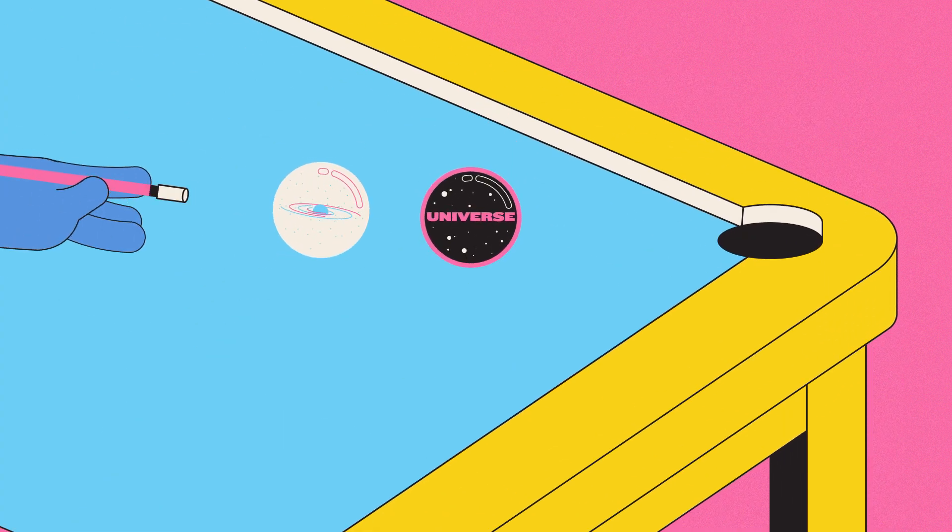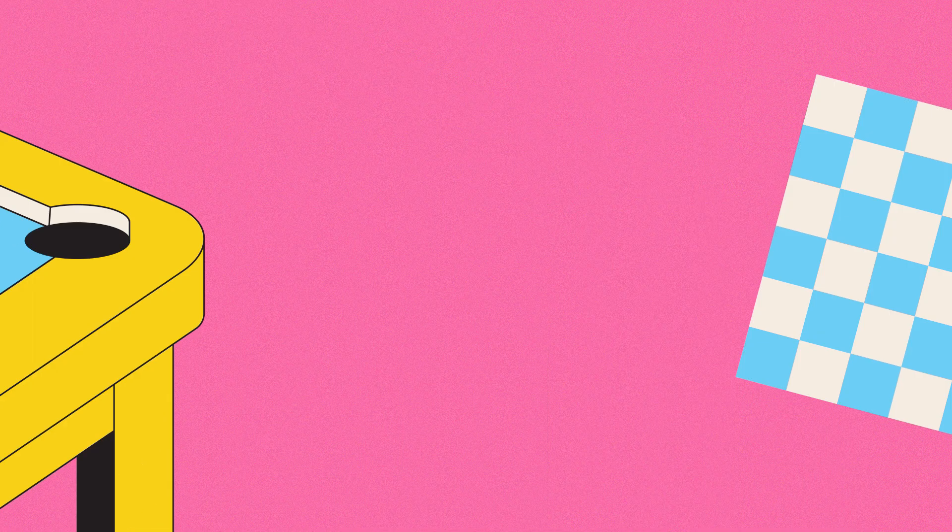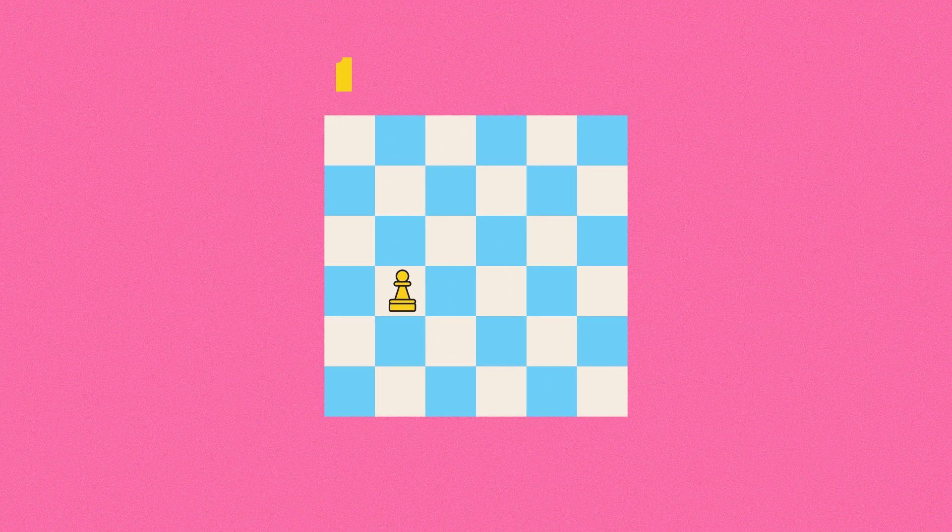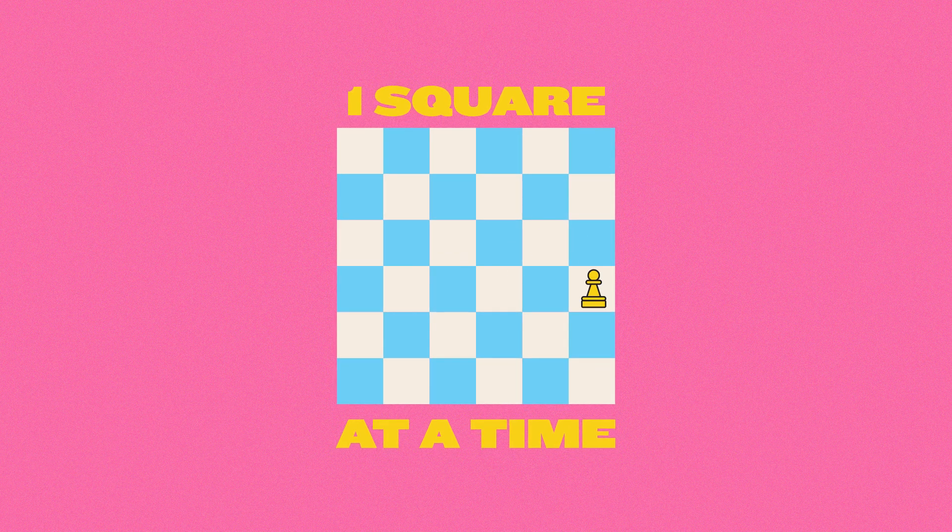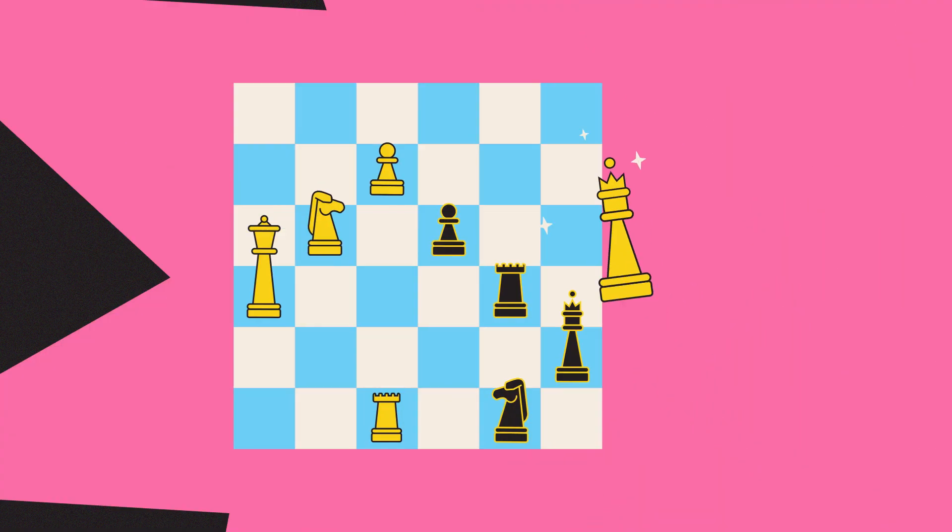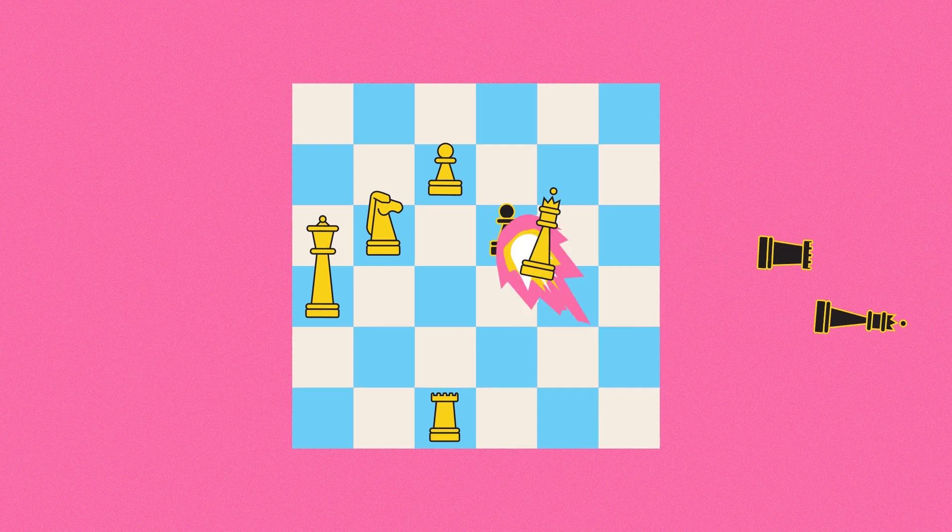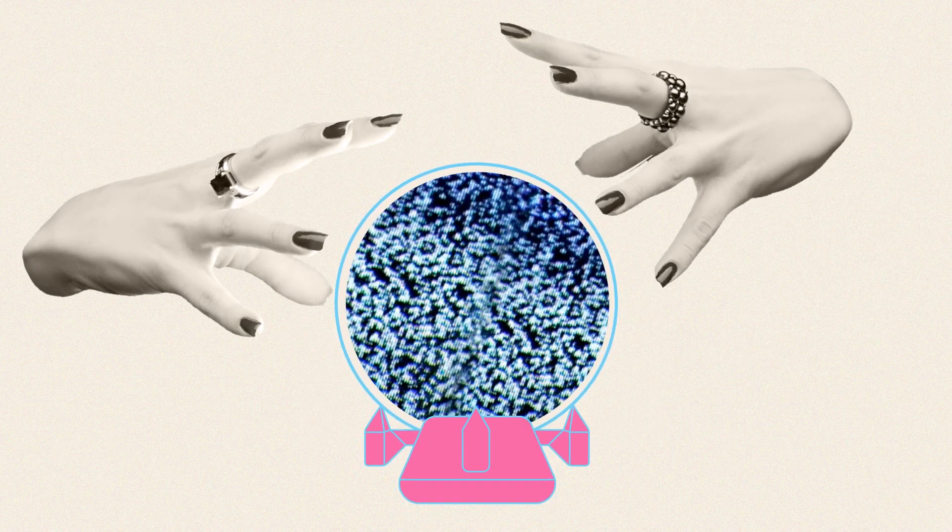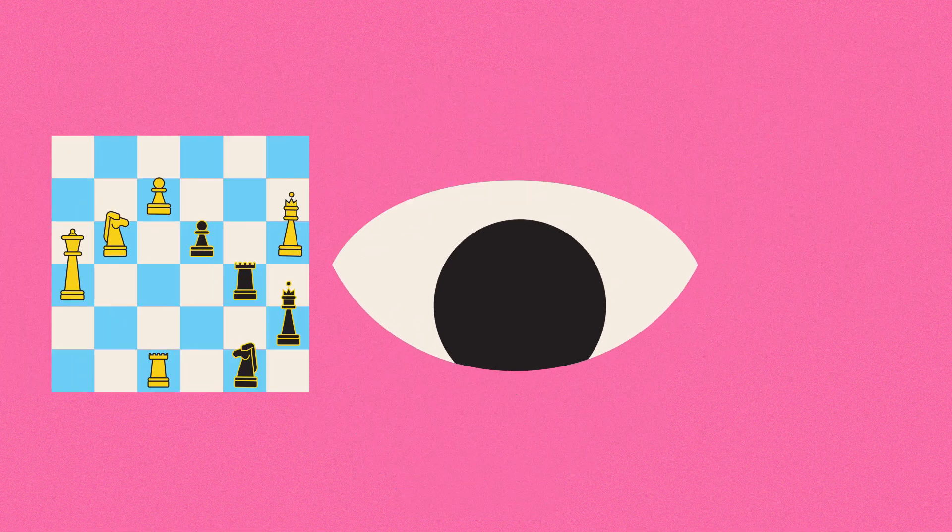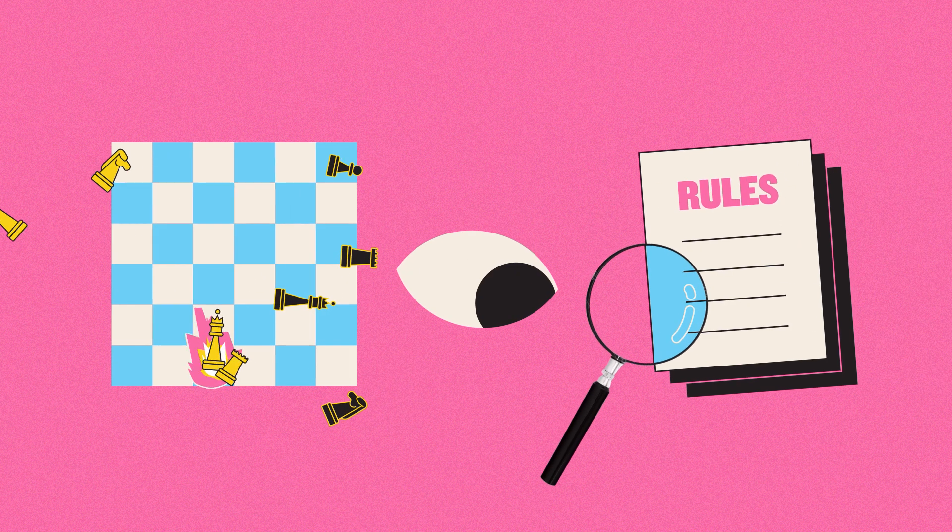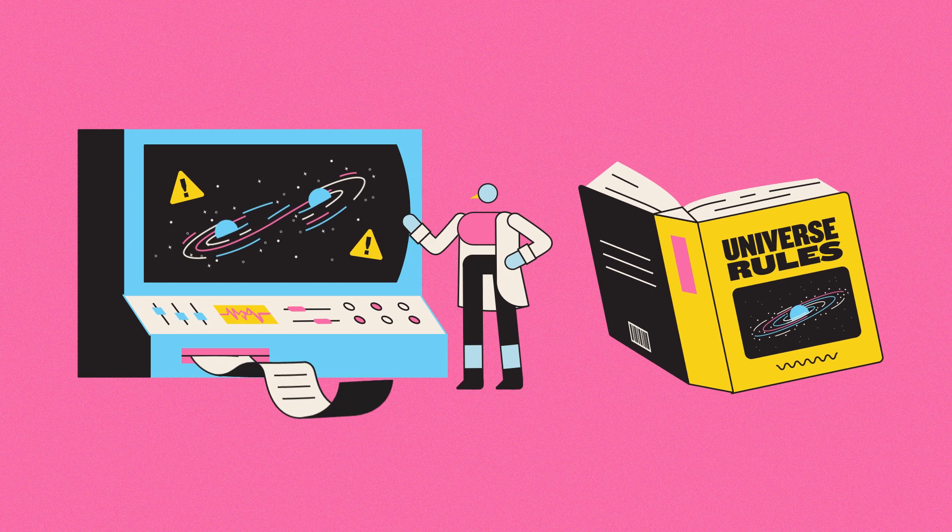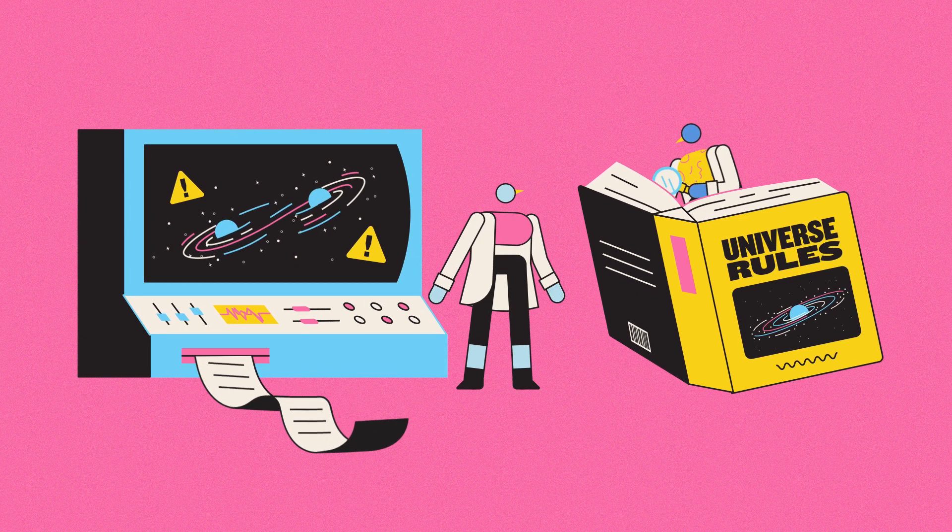But sooner or later, something's going to catch us off guard. For example, in chess, a pawn can only move one square at a time, but if it reaches the far side of the board, it gains the powers of a queen and starts zooming around all over the place. We have no way of predicting this until we see it. But when we do, we're forced to re-examine all the rules we thought we'd learned. And sometimes, this is exactly what happens in science.